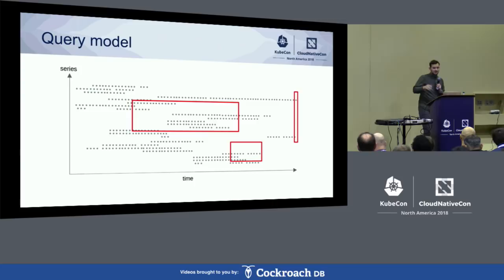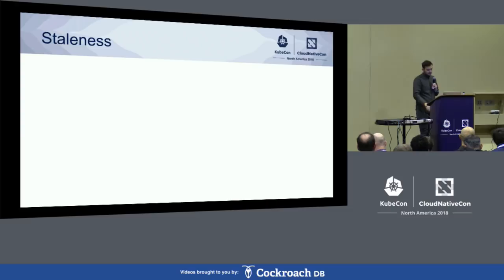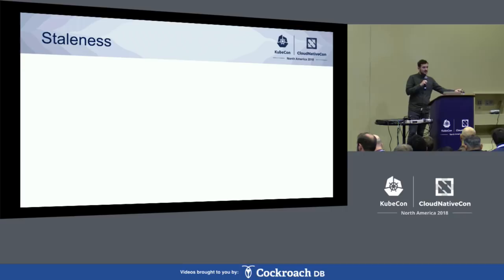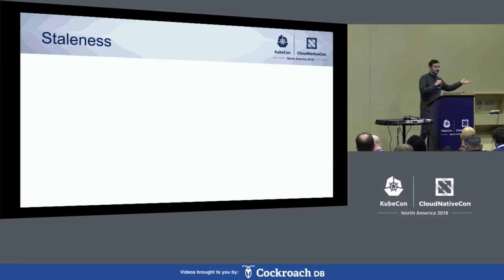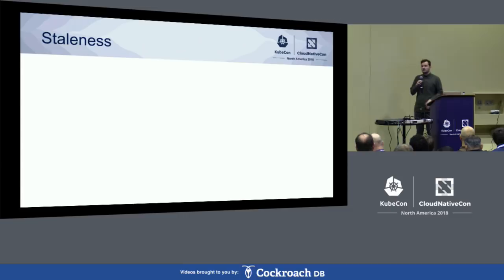Another cool feature that I think is pretty unique about Prometheus in the space — because Prometheus is pull-based, it can immediately detect if a time series goes away. So if our slash metrics endpoint had metrics for some path information and that went away, then we can immediately tell on the next scrape that this time series has stopped.